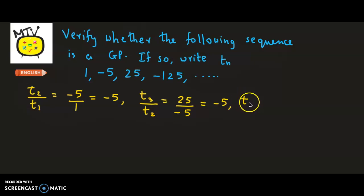Lastly, let's consider the ratio between T4 and T3. T4 is -125, T3 is 25, and again we get the ratio as -5.